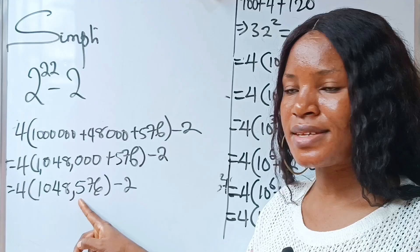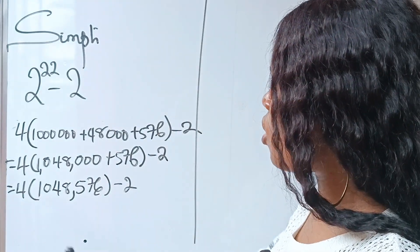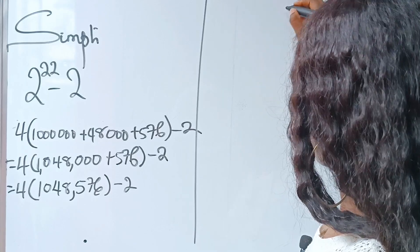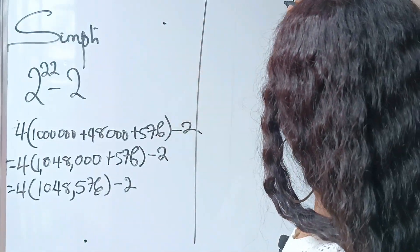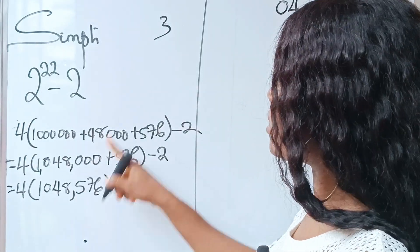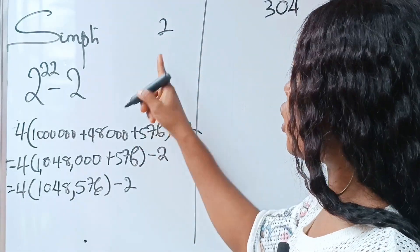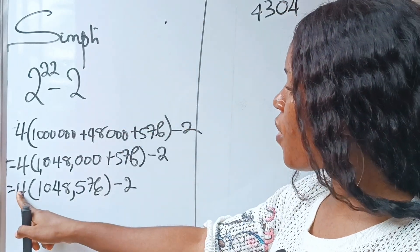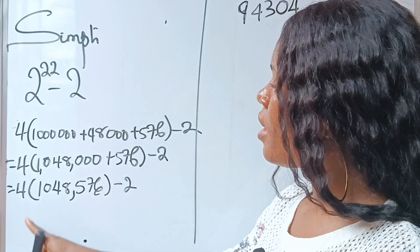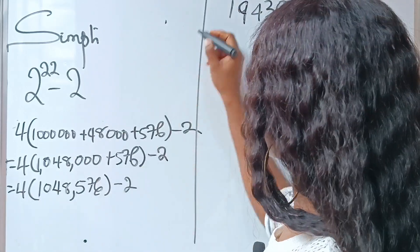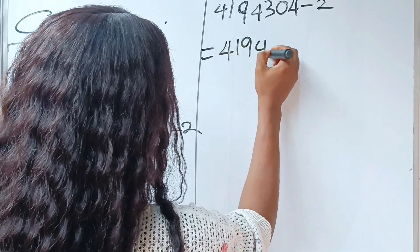We multiply 1,048,574 by 4. 4 times 4 is 16 — write 6 carry 2. 4 times 7 is 28 plus 2 is 30 — write 0 carry 3. 4 times 5 is 20 plus 3 is 23 — write 3 carry 2. 4 times 8 is 32 plus 2 is 34 — write 4 carry 3. 4 times 4 is 16 plus 3 is 19 — write 9 carry 1. 4 times 0 is 0 plus 1 is 1. 4 times 1 is 4. So 2 to the power of 22 minus 2 equals 4,194,302.